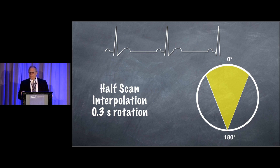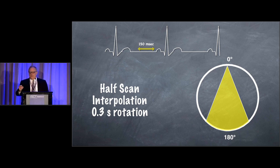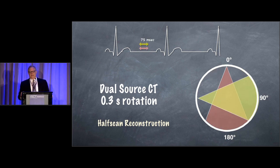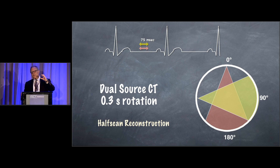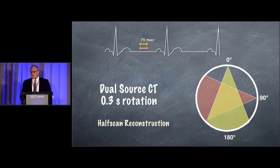The way to think about temporal resolution is that it takes 180 degrees of information to reconstruct a transverse section. With a scanner that rotates in approximately 300 milliseconds — we have 270–280 millisecond scanners — that gives us 150 milliseconds of temporal resolution for a single transverse section. Dual-source scanners have the benefit of only needing to rotate 90 degrees. So if a scanner completes a full 360-degree rotation every 300 milliseconds, one-quarter of a turn takes only 75 milliseconds. A 75 millisecond versus 150 millisecond temporal resolution is a substantial difference for freezing motion.